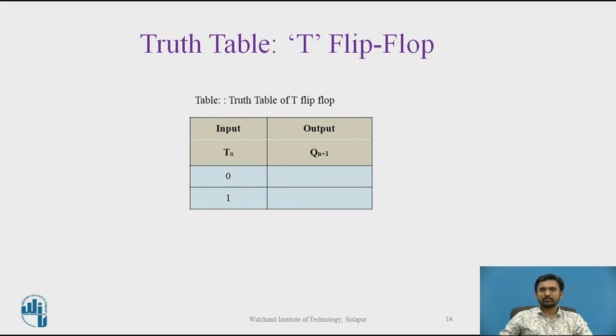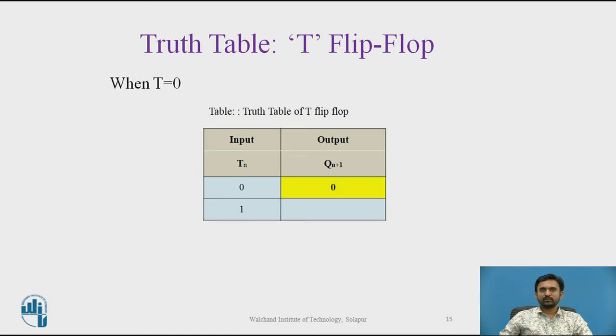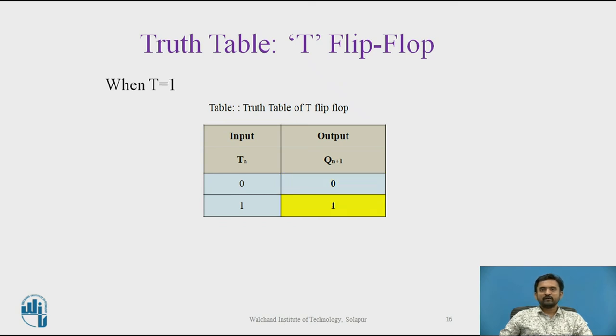The truth table of T flip-flop is given. If the T input is in 0 state, that is J equals K equals 0, the Q output will not change with the clock pulse because we know for JK flip-flop J equals K equals 0 output will be no change. This state is called as memory state. When you provide a logic 1 input to a T flip-flop, if the output is currently at logic high, it changes to logic low. And if it is currently at logic low, it changes to logic high and this state is called as toggle state.